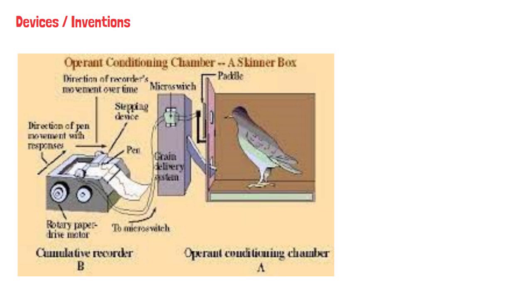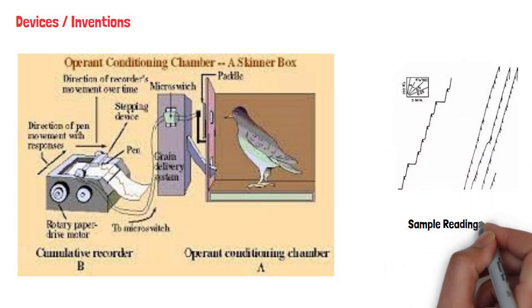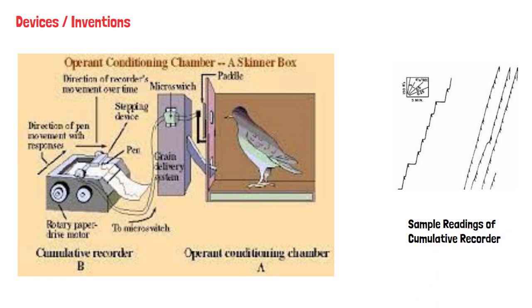In order to track responses, Skinner also developed a device known as a cumulative recorder. The device recorded responses as an upward movement of a line so that response rates could be read by looking at the slope of the line.